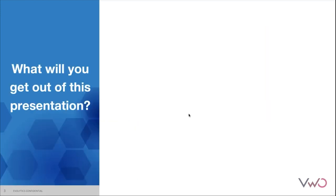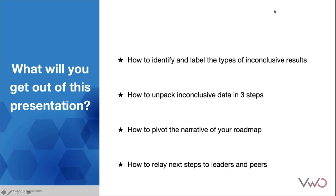Let's dig into what you can expect to get from this presentation. First, I want you to be able to identify and label the types of inconclusive results. Along with that, I want you to take away three steps and be able to apply those to a checklist for yourself and your business, learn how to pivot the narrative of your roadmap, and lastly, how to relay next steps to your leaders and your peers.